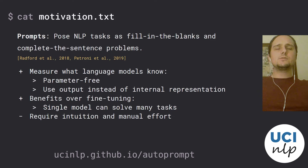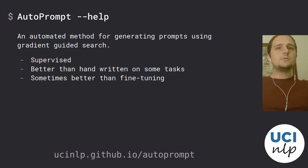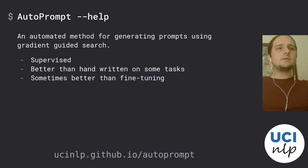In order to encourage more widespread use of prompts, we introduce Autoprompt, an automated method for generating prompts using gradient-guided search. The key idea is, unlike manually writing prompts, to exploit the large amounts of supervised training data for many tasks in order to come up with good tokens to put in the prompt. As we will see in the following slides, Autoprompt is better than handwritten prompts on some tasks, as well as sometimes better than fine-tuning.